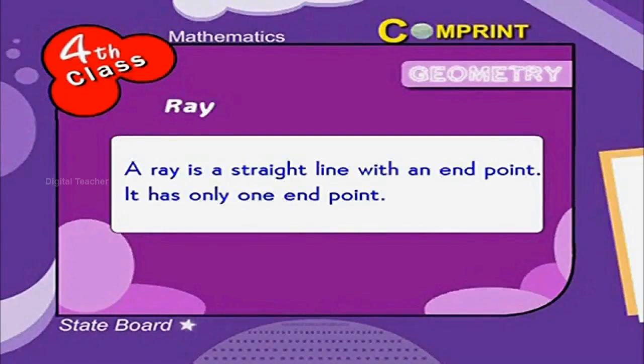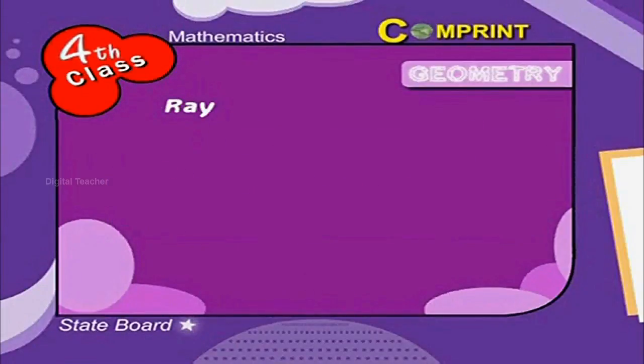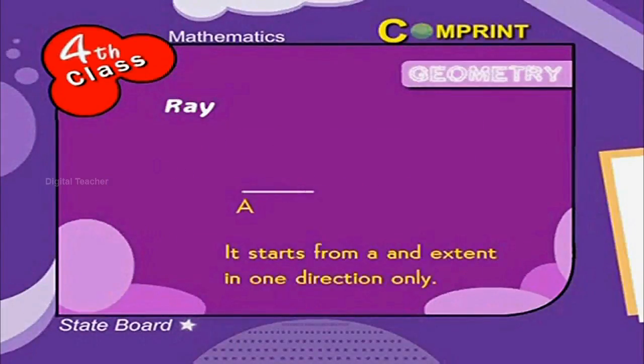A ray is a straight line with an end point. It has only one end point. Look at the example — it starts from A and extends in one direction only.